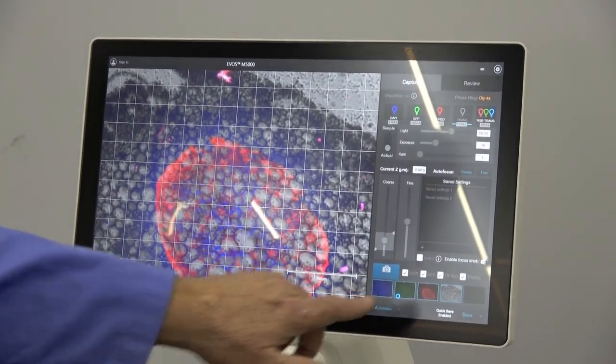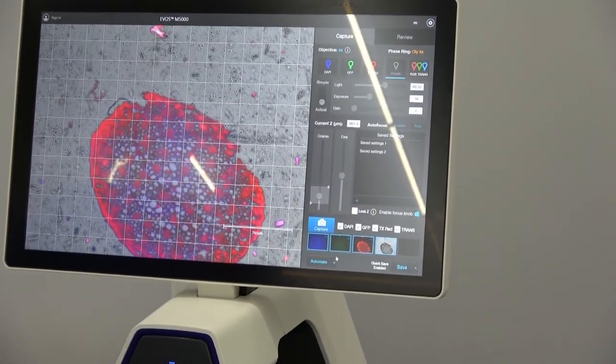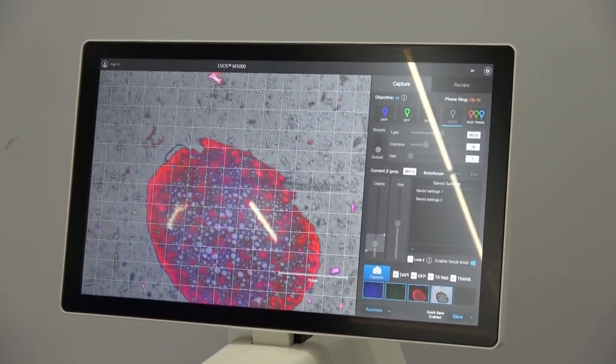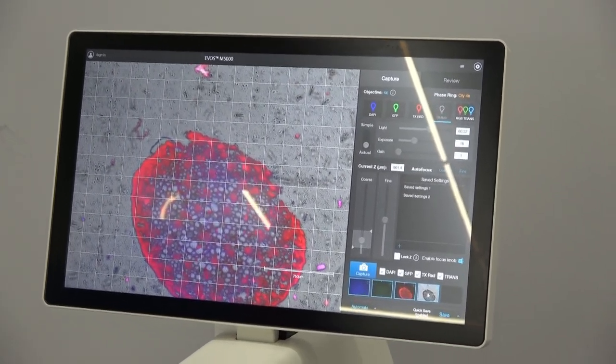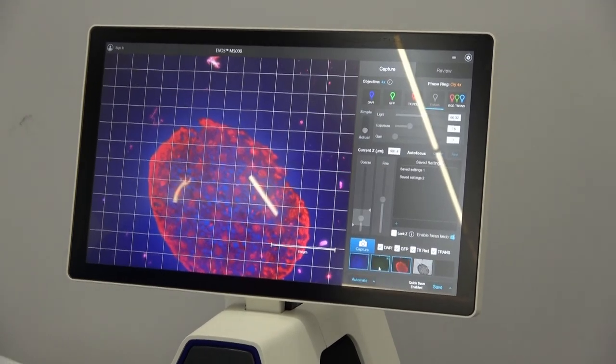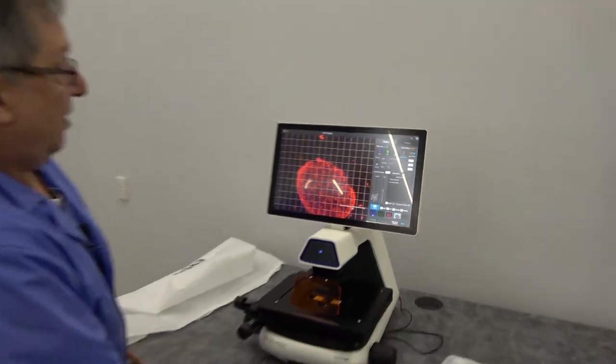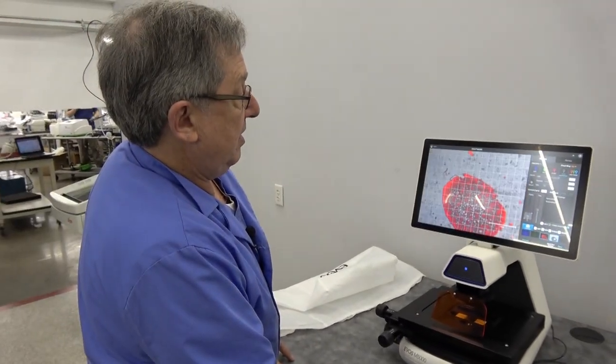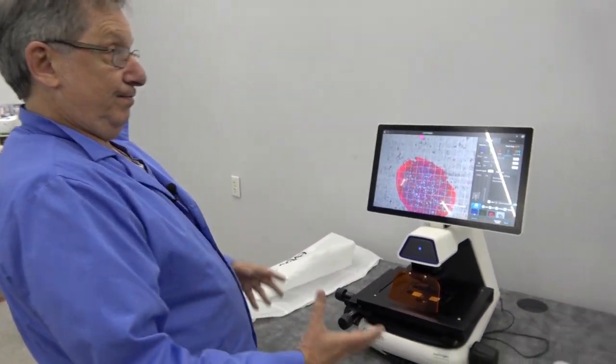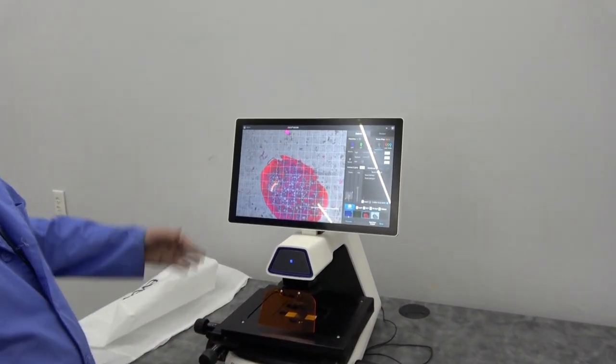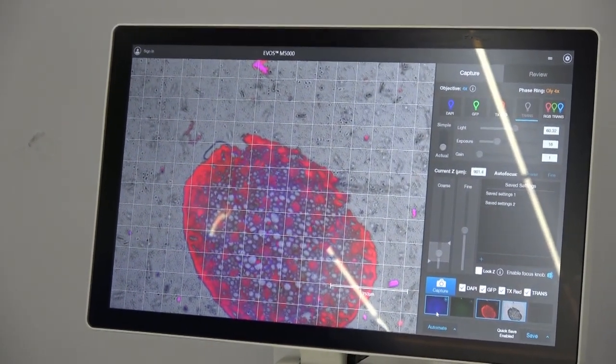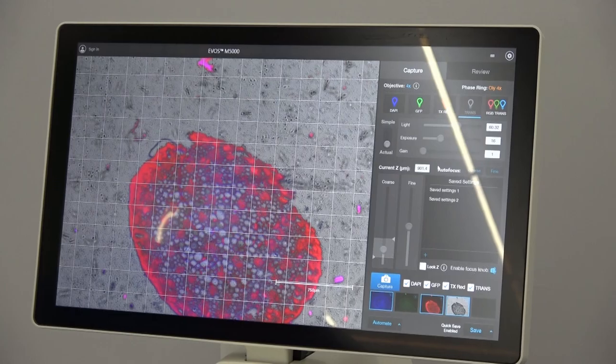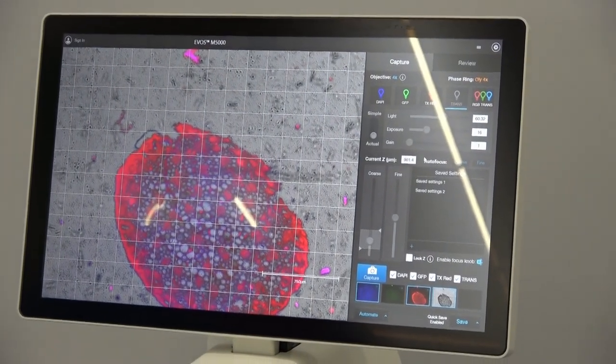We still have some of our other images down here, so it is showing multiples. And there we go. We got those different images and now we can turn on and off the difference to see what we've captured in four different color wavelengths. Very easy to change those over.